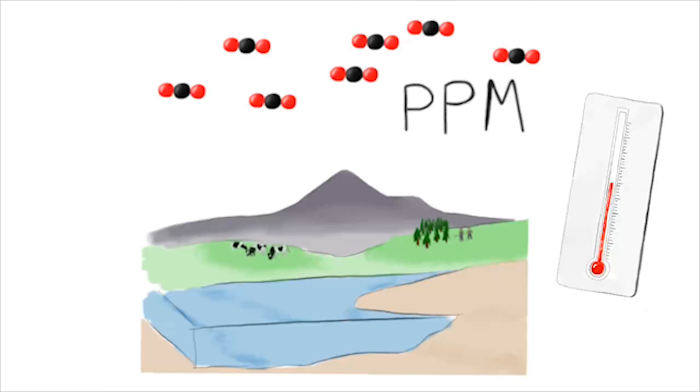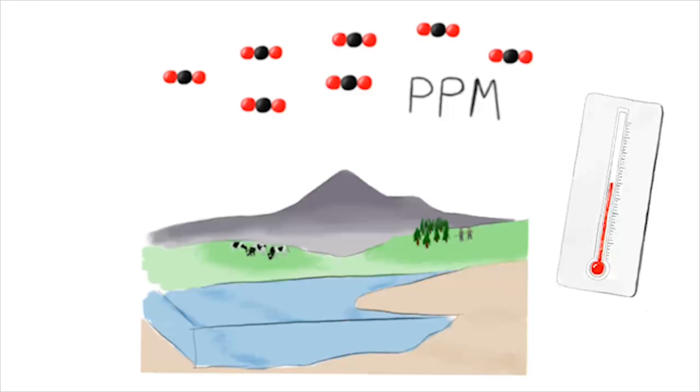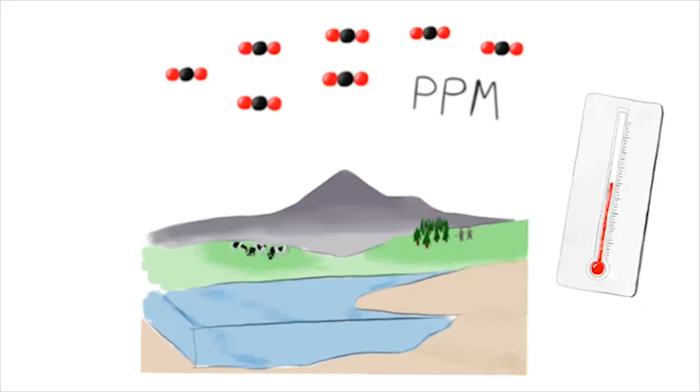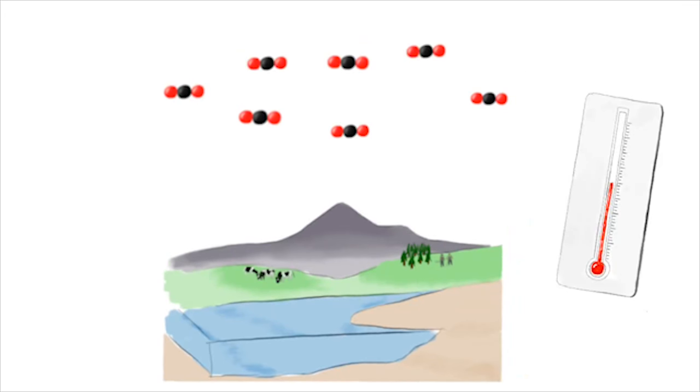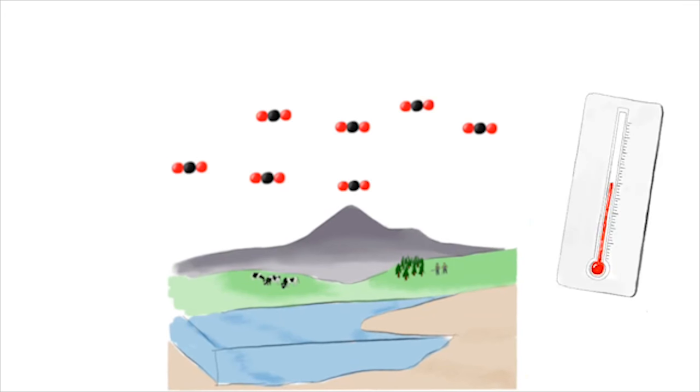The amount of carbon dioxide in our atmosphere is measured as ppm, or parts per million. Throughout Earth's history, the concentration of greenhouse gases in the atmosphere has varied. And as it has changed, so have the living conditions on our planet.